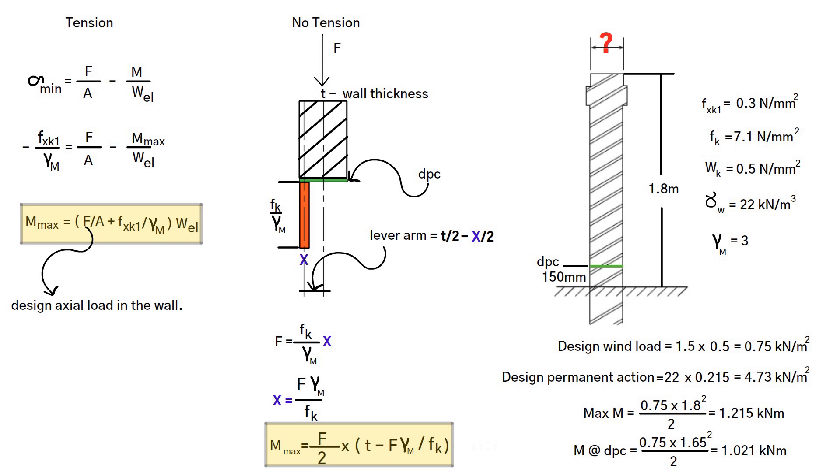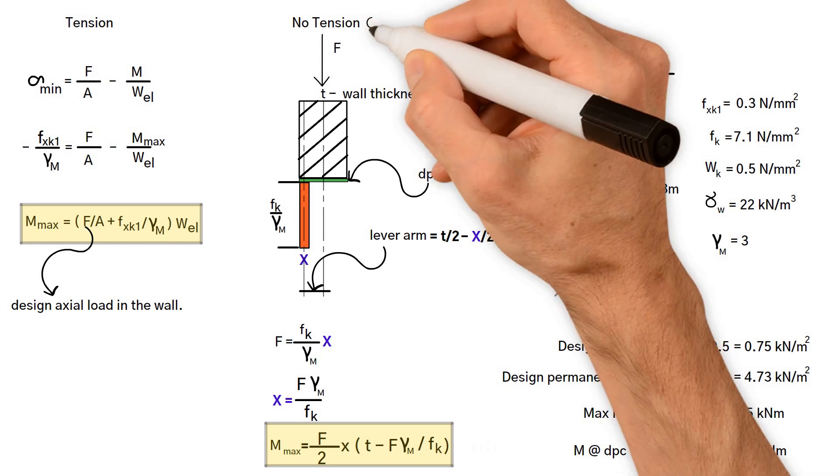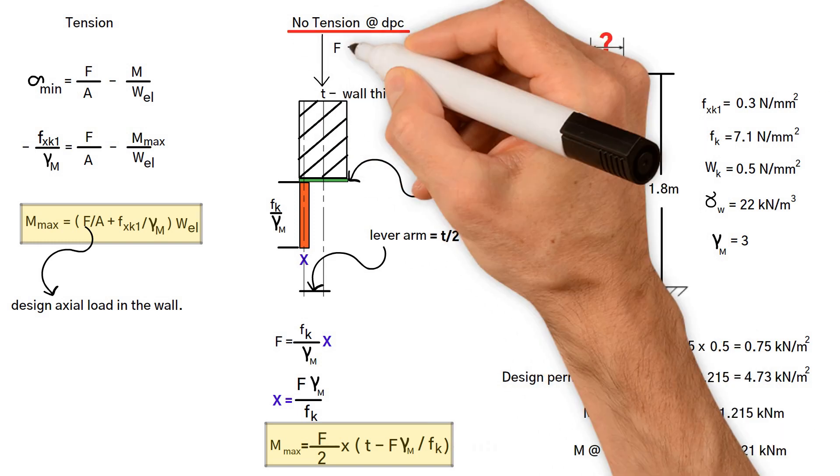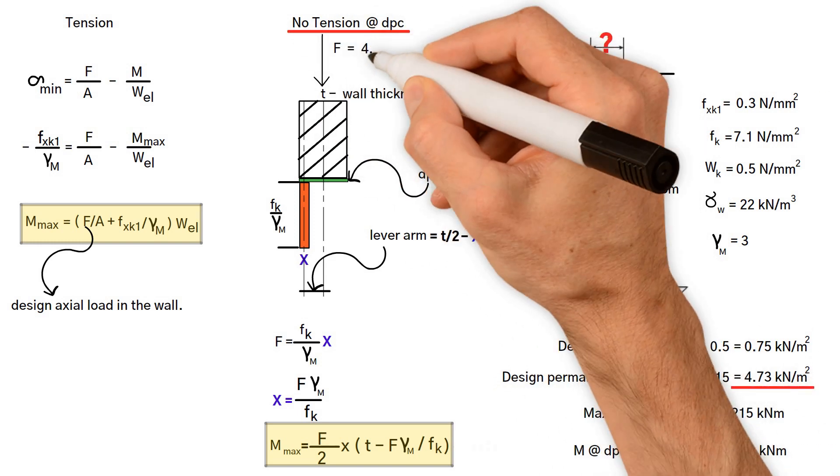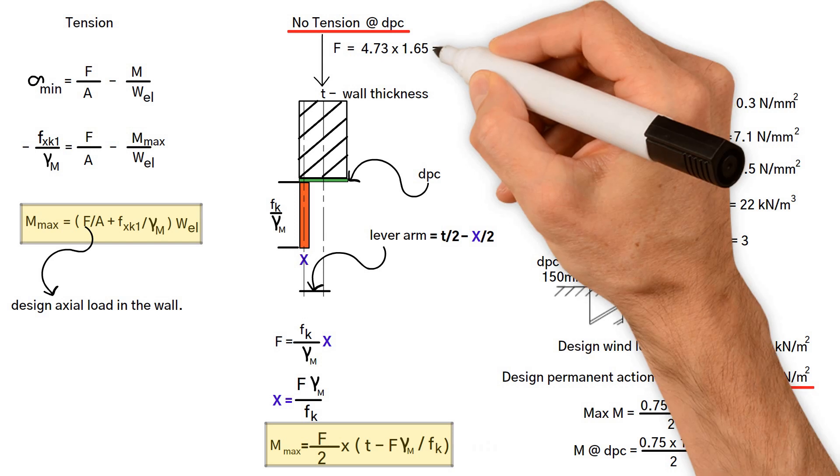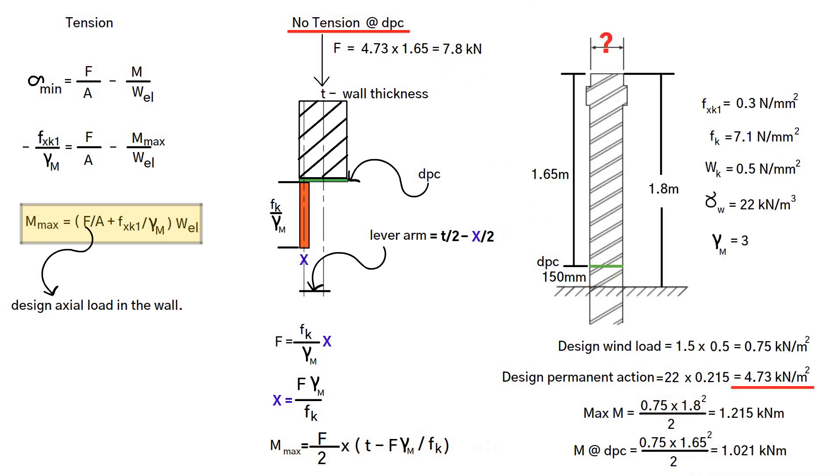To design the wall, we must first check the no tension case at the DPC. Vertical force F equals wall self-weight, which is 4.73 kN/m² times 1.65 meters, for a total of 7.8 kilonewton.